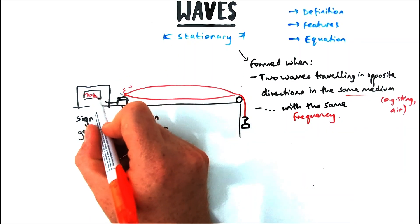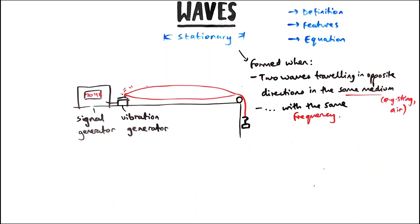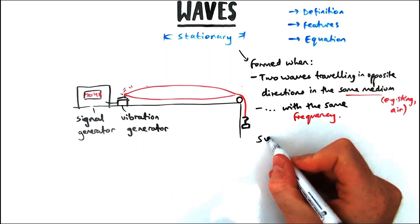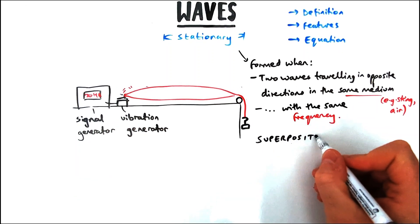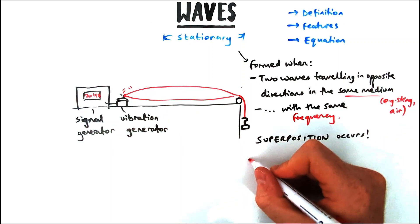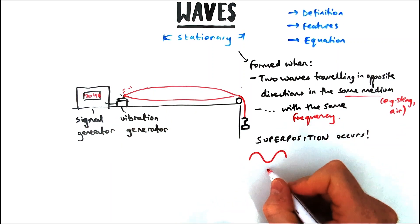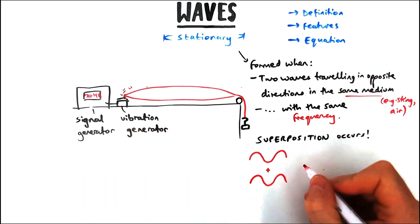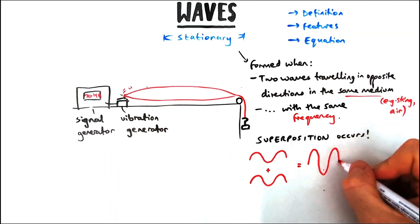These waves are produced by the same signal generator, so they have the same frequency, for example 20 hertz. Now stationary waves form these interesting patterns on that piece of string due to something called superposition, which comes up a lot in physics. It will come up in optics as well.